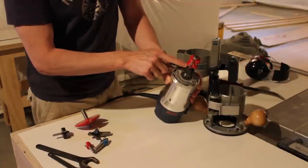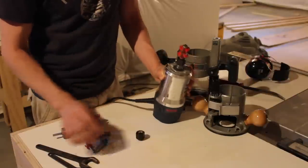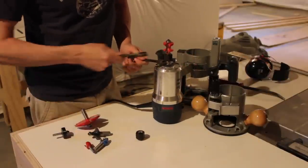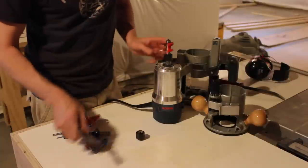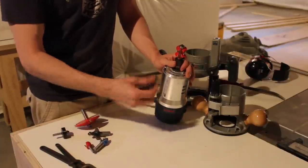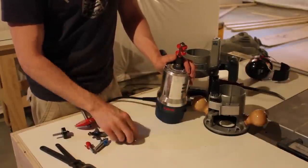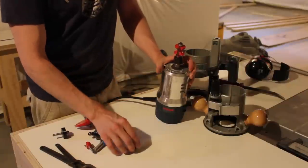If I wanted to go to a different router bit that took a quarter inch collet, I would then just use a couple of wrenches, and I would be able to back this collet off and replace it with a quarter inch one. Most routers you purchase on the market in a store will come with both collets.